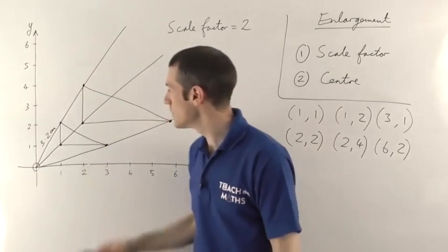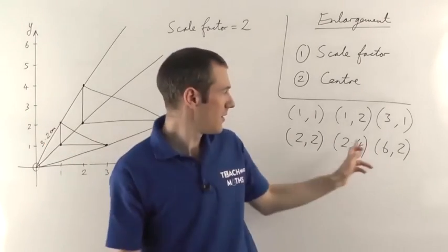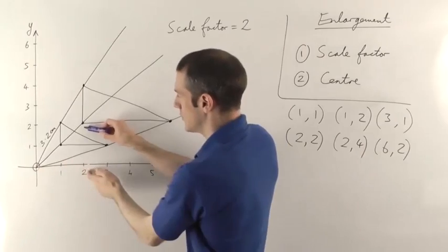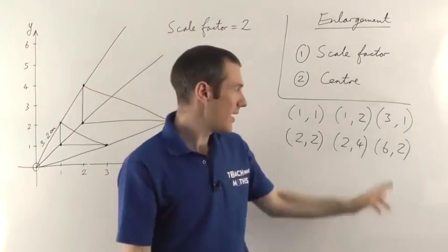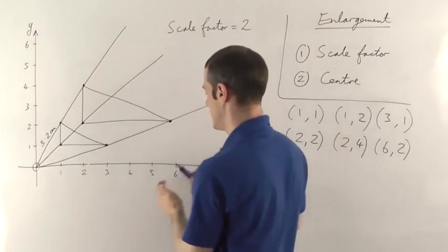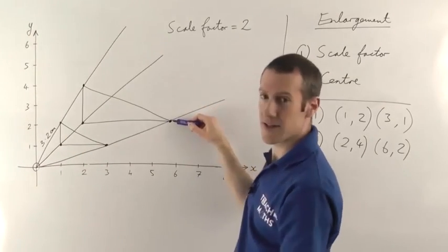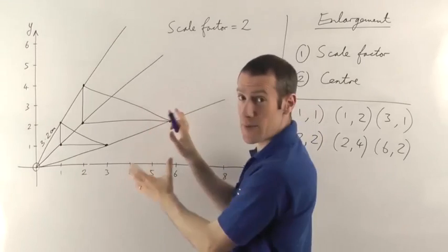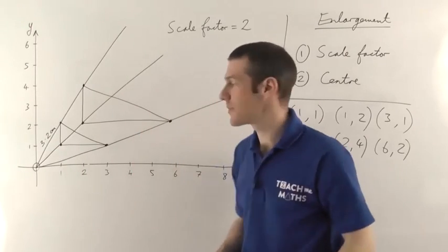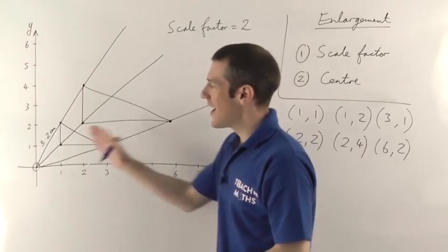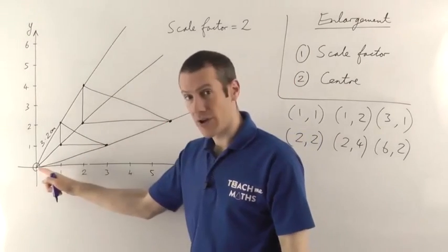If you've done this accurately, you'll find the coordinates are exactly the same as if you'd used the other method. So the first point should be at 2 comma 2, the second at 2 comma 4, and the third at 6 comma 2 — which matches. Obviously if you do this on graph paper you can make it very accurate and have your coordinates in exactly the right point. But that's the method you need to use if the centre is not the origin.